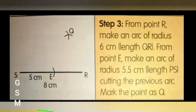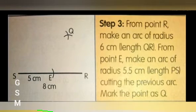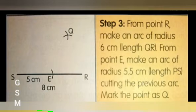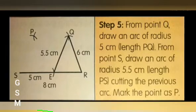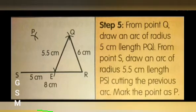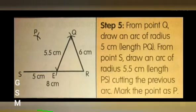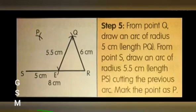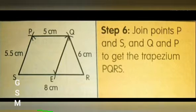Step 3: From point R, make an arc of radius 6 cm (length of QR). From point E, make an arc of radius 5.5 cm (length of PS), cutting the previous arc; mark the point as Q. Step 4: Join points Q and R, and E and Q. Step 5: From point Q, draw an arc of radius 5 cm (length of PQ). From point S, draw an arc of radius 5.5 cm (length of PS), cutting the previous arc; mark the point as P.